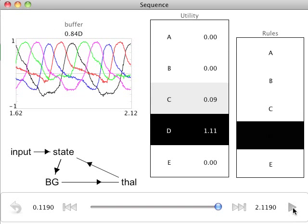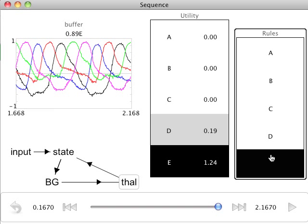Pausing the simulation allows us to see this behavior more clearly. Now the highest utility is D, so the rule that changes state D to E has its action selected. Stepping ahead allows that rule to take effect, changing the cortical state to E.